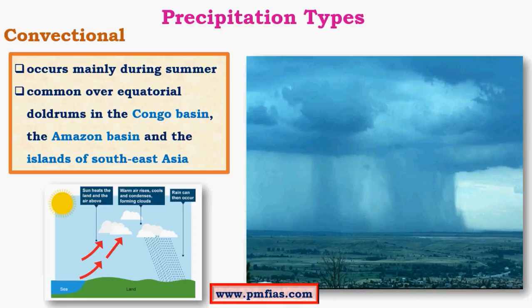Convectional rainfall mainly occurs during summer because of the greater amount of heat available. It is common over the equatorial doldrums regions. The main regions which fall under the Intertropical Convergence Zone are the Congo basin and the Amazon basin — all part of equatorial regions with equatorial rainforests. There is also a huge supply of moisture from the surrounding oceans. The most important factor is intense heat from the sun. Convectional rainfall is also very common in India, but the most intense convectional rainfall occurs along the doldrums.